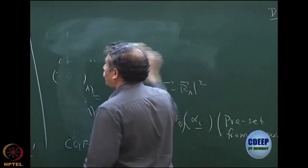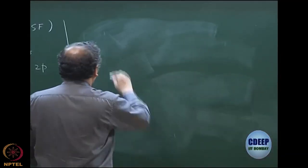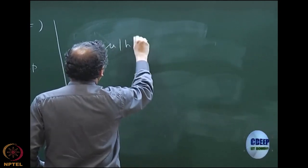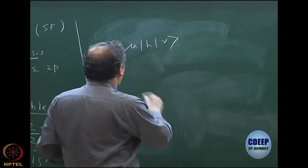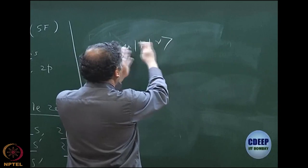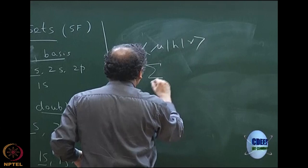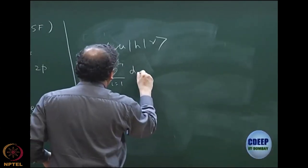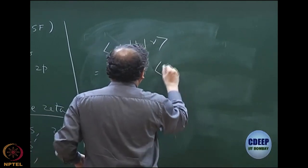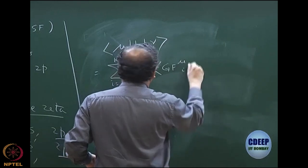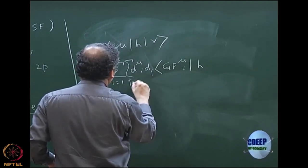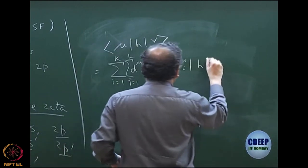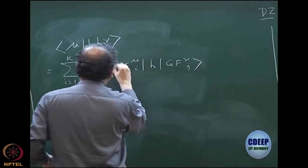Now let me explain how to calculate the integrals. For a one-electron integral ⟨μ|h|ν⟩, each of μ and ν is a contracted Gaussian expanded in terms of PGFs. So μ is expanded as Σ_{i=1}^{K} d_{μi} · PGF_{μi} and ν is expanded as Σ_{j=1}^{L} d_{νj} · PGF_{νj}. The basic integration required is over primitive Gaussians.